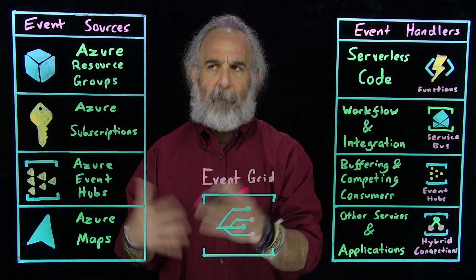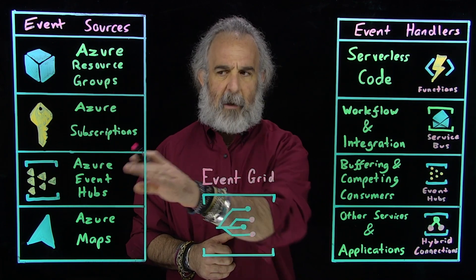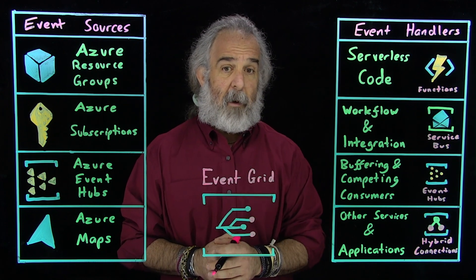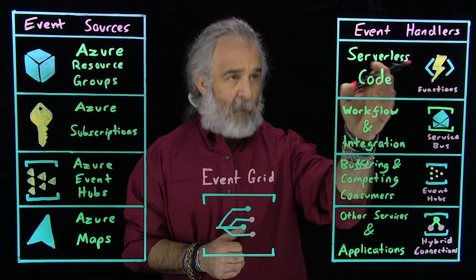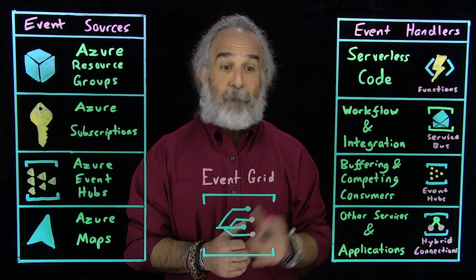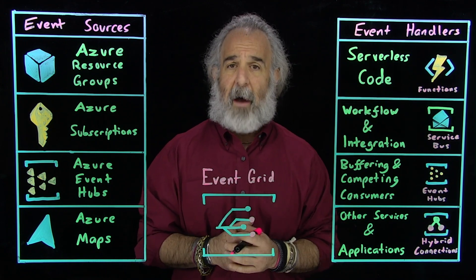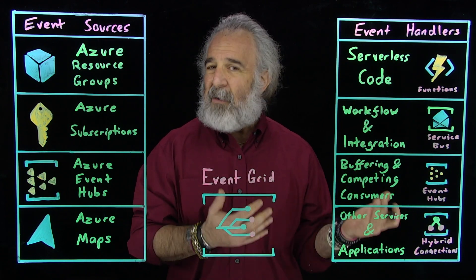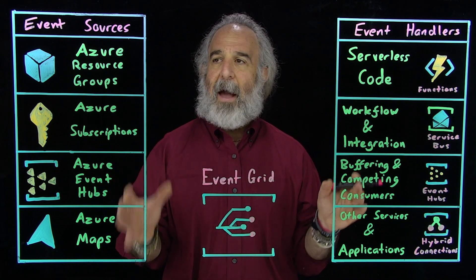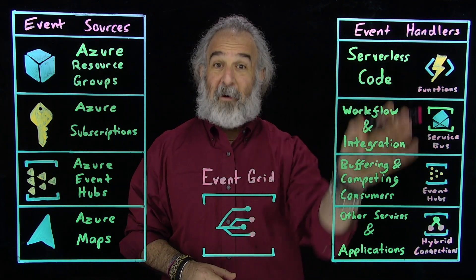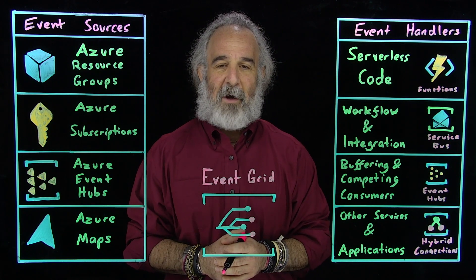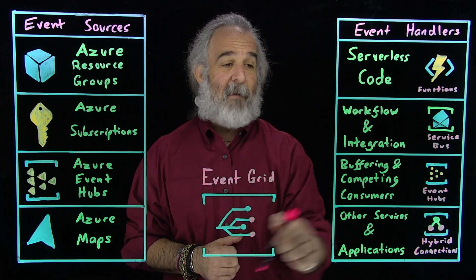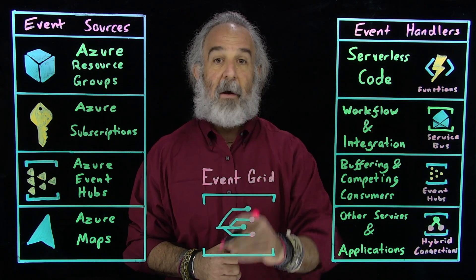We have a whole bunch of Event Sources that can potentially interact with Event Grid. We have Event Grid over here in the middle, sitting between our two columns — more on that in just a second. And over here on the right, we have what's known as Event Handlers. Event Handlers are going to be the things that receive information about events and then go execute on that information and do something on our behalf. So we're really looking at things that happen, elements that take those things and create some action, and something in the middle that connects the things creating events to the things that will act on those events. That's what Event Grid really does.